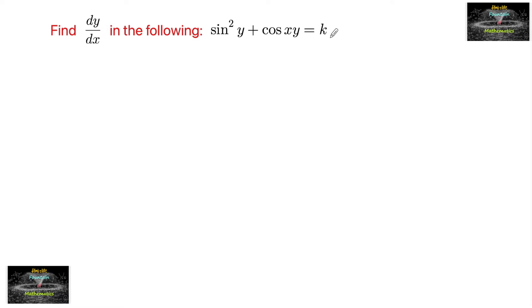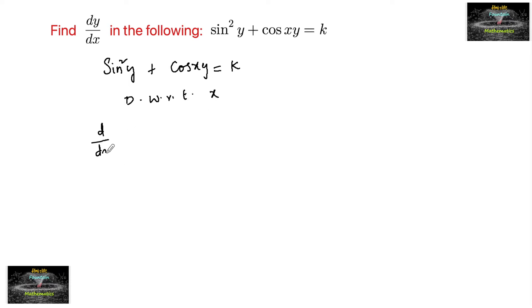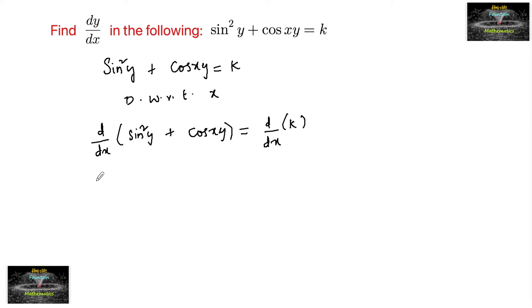Find dy/dx for the following: sin²y + cos(xy) = k. Given sin²y + cos(xy) = constant k, differentiate with respect to x. So we have d/dx of sin²y plus d/dx of cos(xy) is equal to the differentiation of constant k.